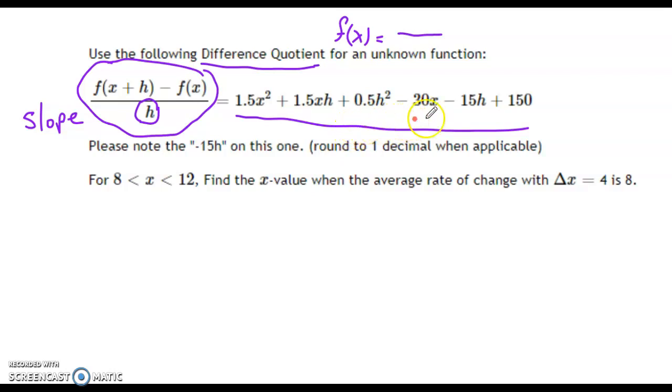What we have here is a formula for slope. This is a formula for slope. Just keep that in your mind. This is not the original formula. The original f of x was not given. So this is just a formula.